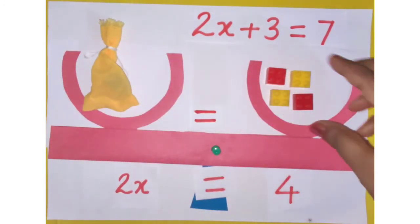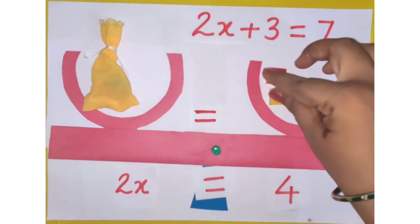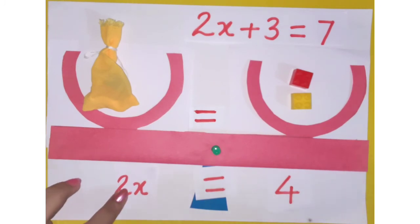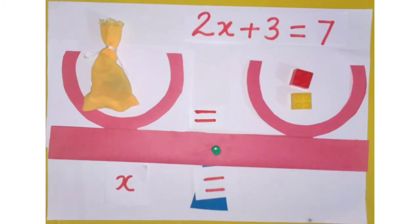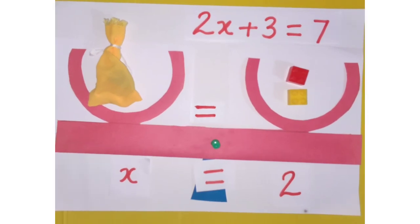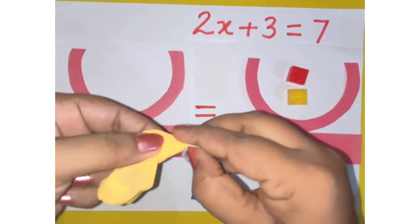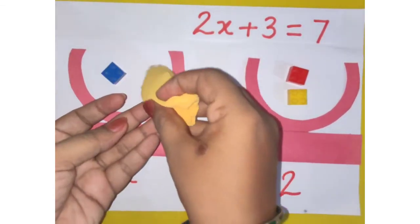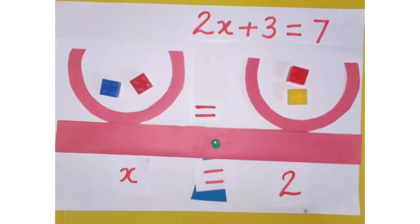And 4 divided by 2 is 2, so 2 blocks remain on the right-hand side. Finally, 1 bag labeled x equals 2 blocks on the right-hand side. Let's check what's in the bag — inside the bag we had 2 blocks, so the left-hand side and right-hand side are balanced. I hope everyone has enjoyed this activity and understood how to solve a linear equation using the balancing method. Thank you, students.